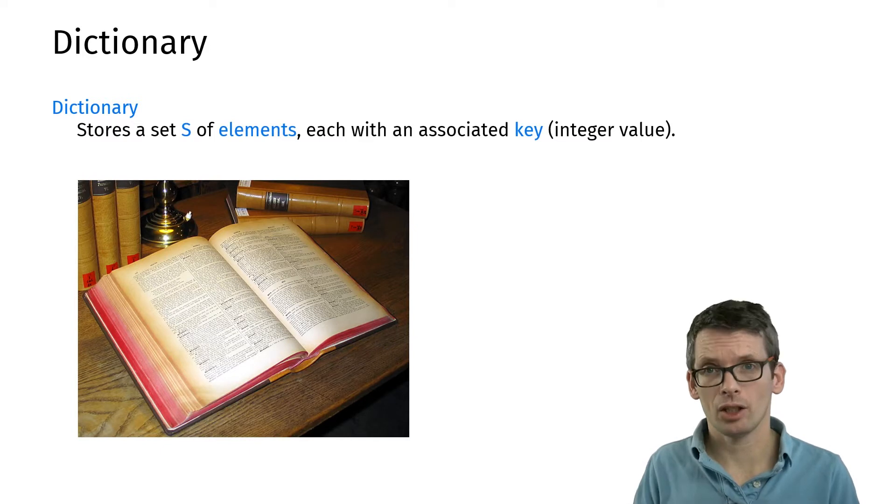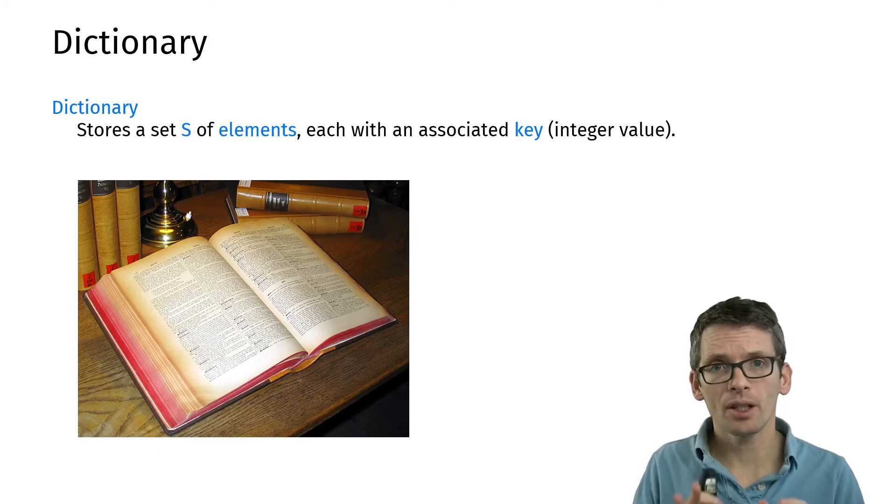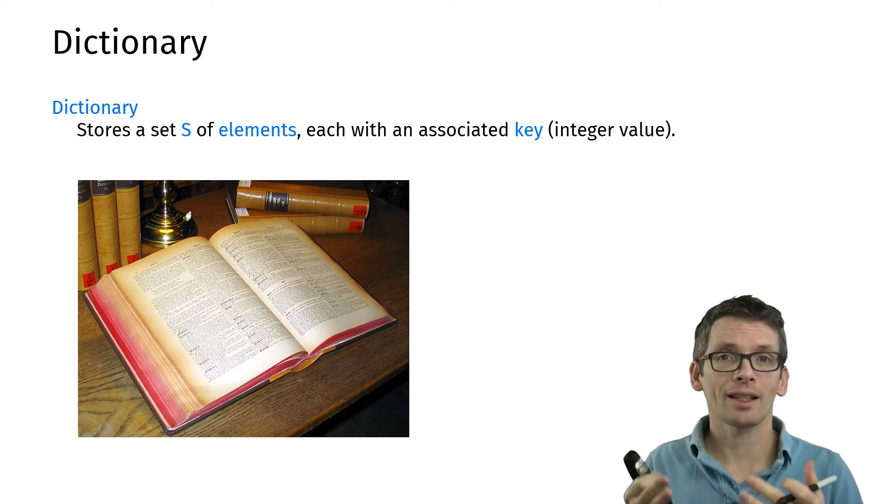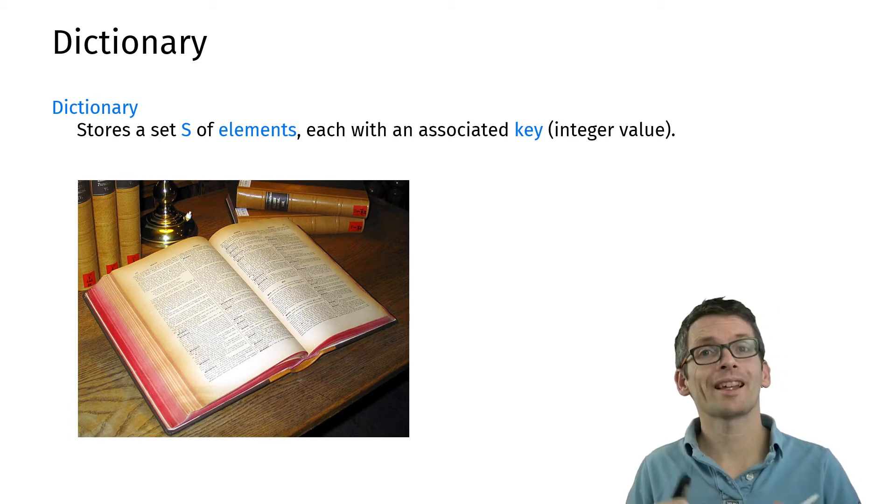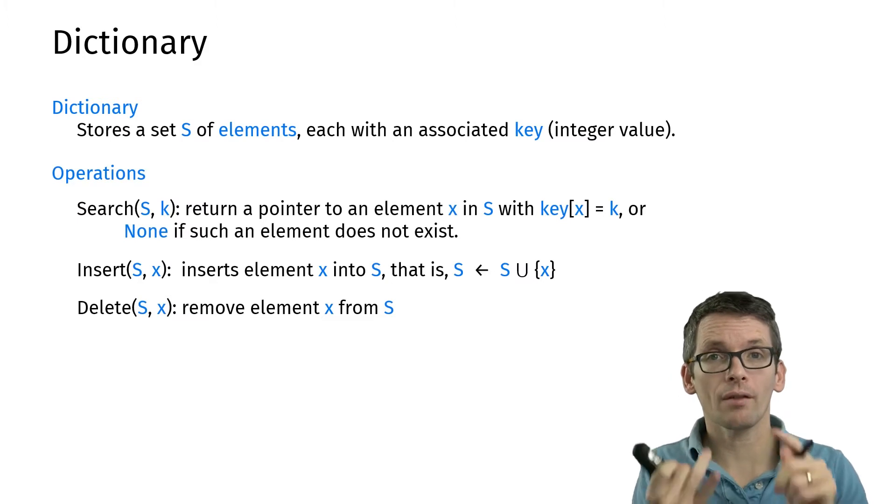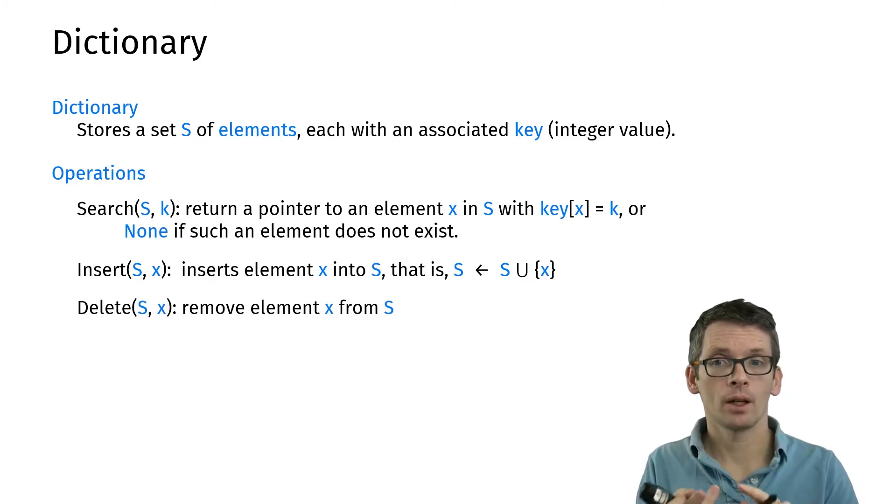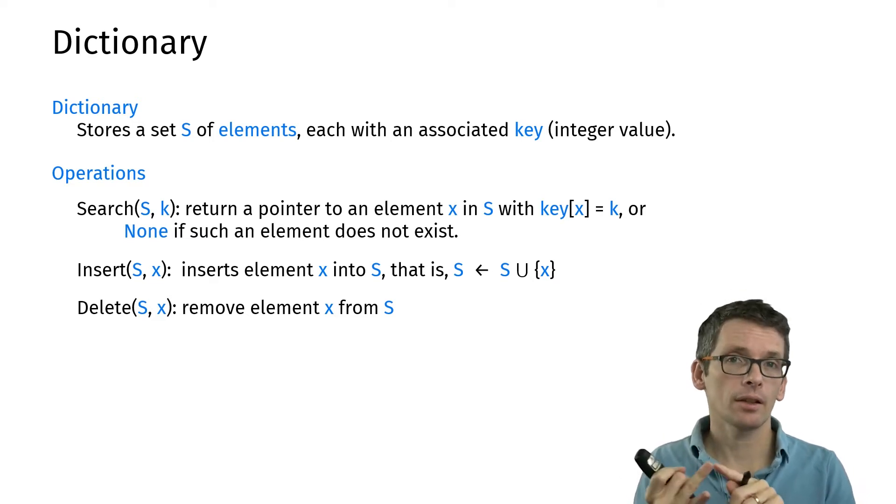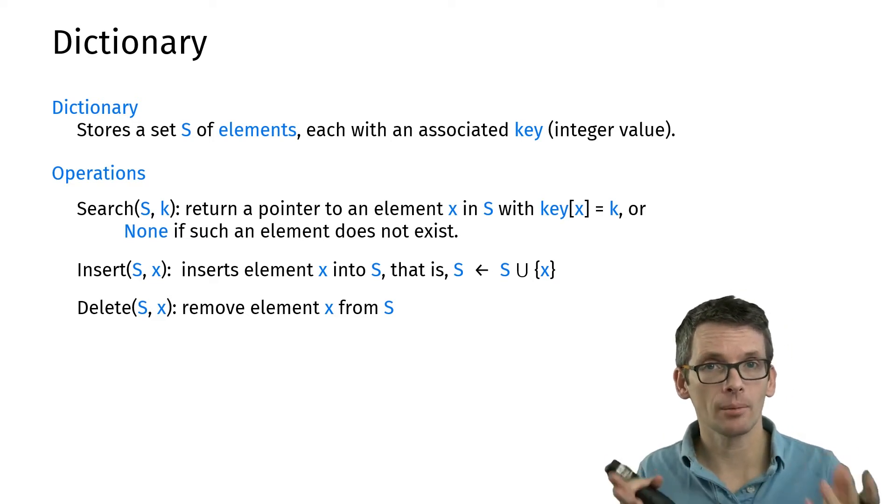So what is a dictionary? A dictionary is a very simple abstract data type. The key operation on dictionaries is searching. We have a set of elements, each with an associated key, and we're going to assume that's an integer key. The three operations we want to have are search, insert, and delete. We want to be able to search an element by its key and then insert and delete elements—that's it.